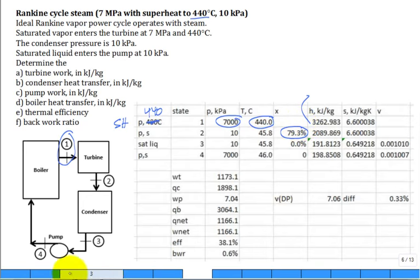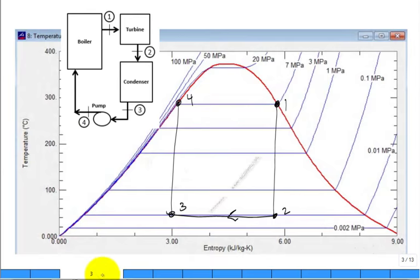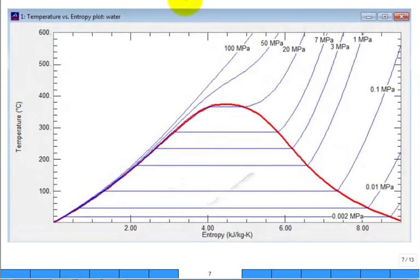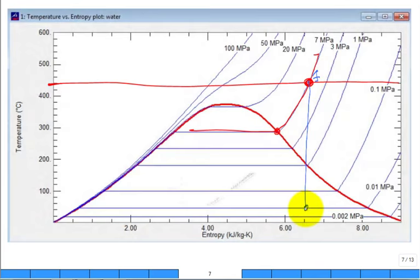Let's take a look at a TS diagram. So if we heat it up, we'll go out to 440. Well, I think I have another diagram. Yeah, here. So instead of stopping state one there, we'll continue to heat it up at seven megapascal till it's 440. Something like right there. So now when you expand it from state one down, you'll find that the quality has improved. The quality is better. It's better. It's more practical.